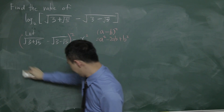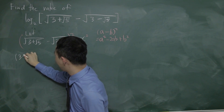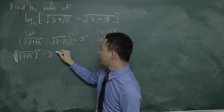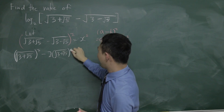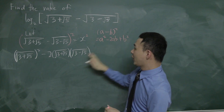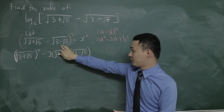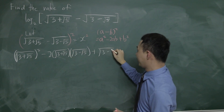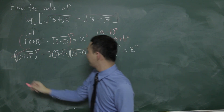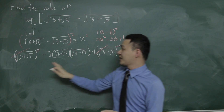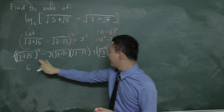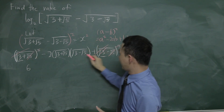For the a² term: squaring √(3+√5) cancels the square root, giving (3+√5). Similarly b² = (3−√5). Adding them: (3+√5) + (3−√5) = 3+3 = 6, since the √5 terms cancel out. So the a² + b² part gives me 6.